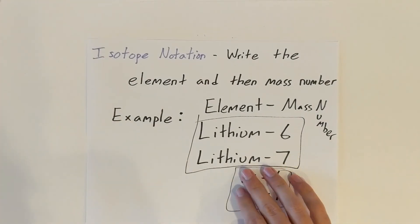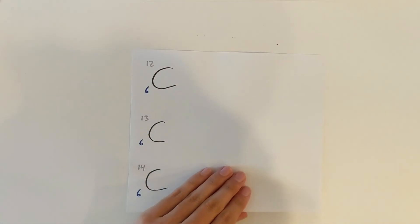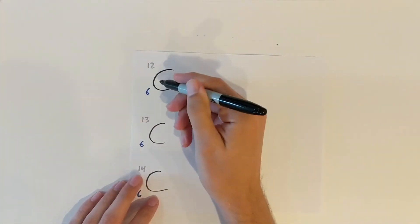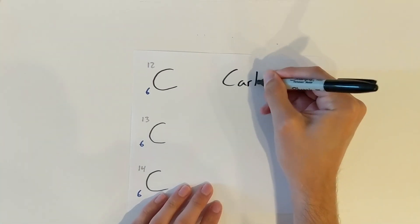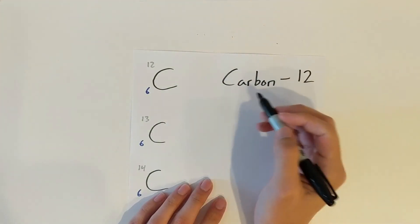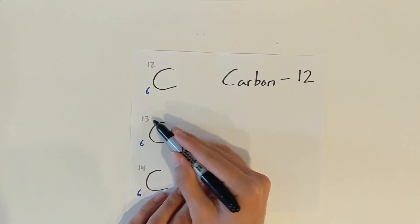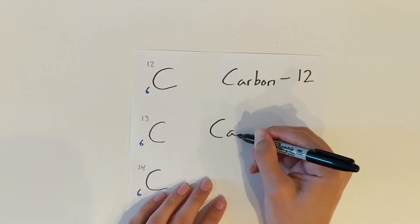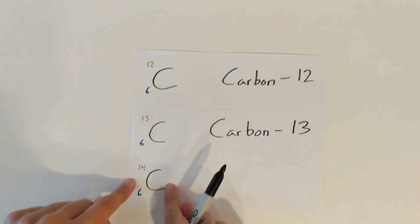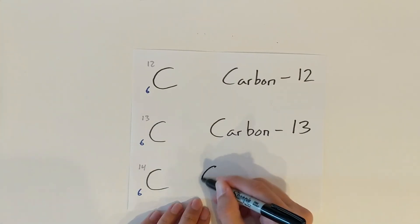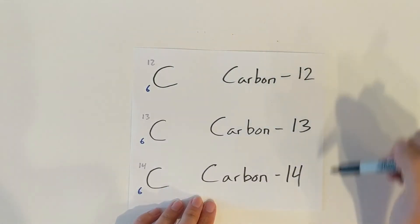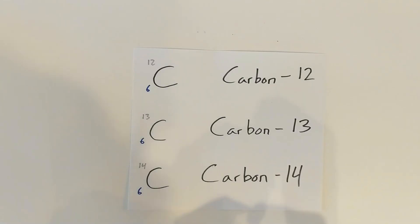Let's take our carbon example and write these down in isotope notation. This carbon would just be carbon with a mass number of 12, so that would be carbon-12. For this one the mass number is 13, so it would be carbon-13. And carbon with a mass of 14 we would just say carbon-14. And these are how we are going to be writing in isotope notation.